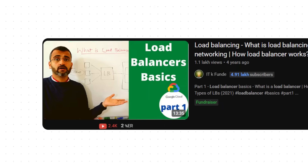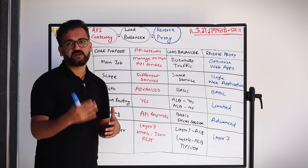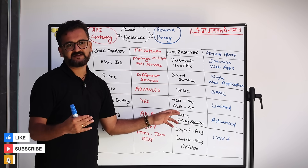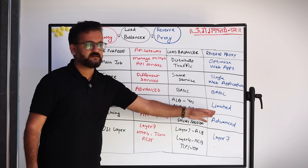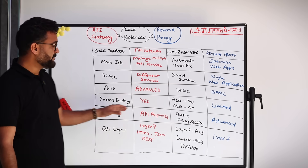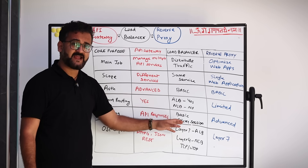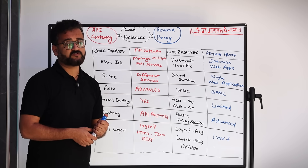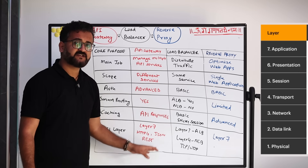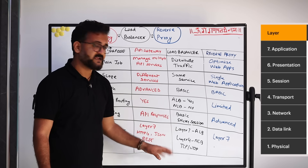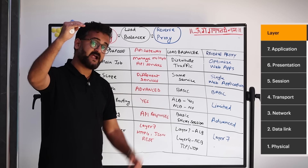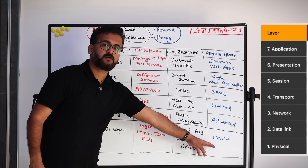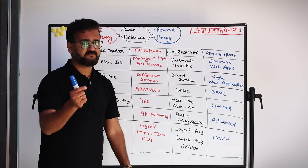For caching: API gateway caches API responses; load balancer handles basic sticky sessions; reverse proxy supports advanced caching to boost website performance. OSI layer: API gateway operates at Layer 7 (HTTP, JSON, REST); load balancer can operate at Layer 7 (application load balancer) or Layer 4 with TCP/UDP (network load balancer); reverse proxy operates at Layer 7.